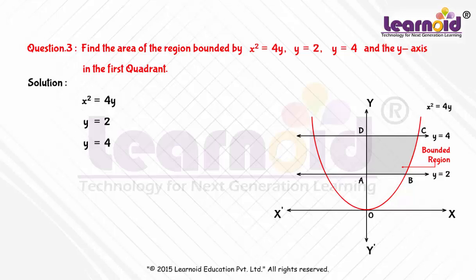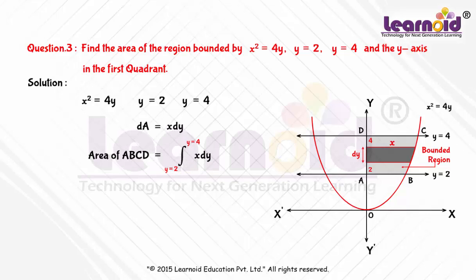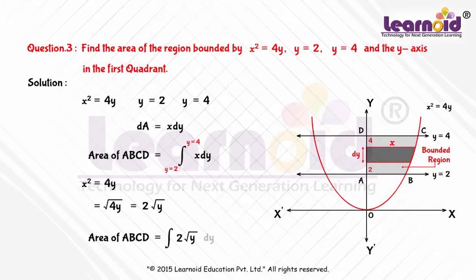To find the bounded area, we draw an area strip of width dy. The area of the infinitesimal strip dA is equal to x dy. The area of ABCD is equal to the integral of x dy from y = 2 to y = 4. Since the curve is x² = 4y, we get x = 2√y. Substituting into the area of ABCD gives the integral of 2√y dy from y = 2 to y = 4.